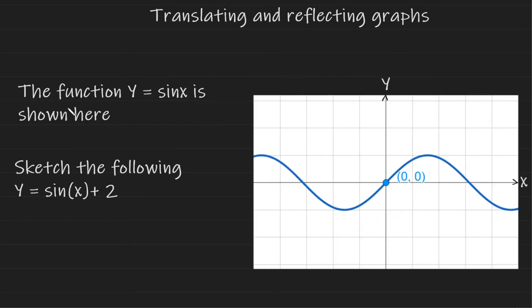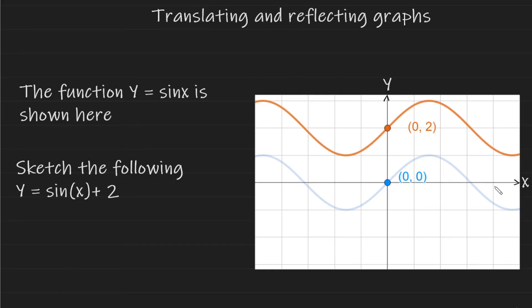For this example, we have the function y equals sine of x and we are asked to sketch the following: y equals sine of x plus 2. Since this plus 2 is on the outside of the function, this entire graph is going to translate upwards by 2 and it should look like this. As you can see, every y coordinate of the graph has moved up by 2 while the x coordinates have remained the same.